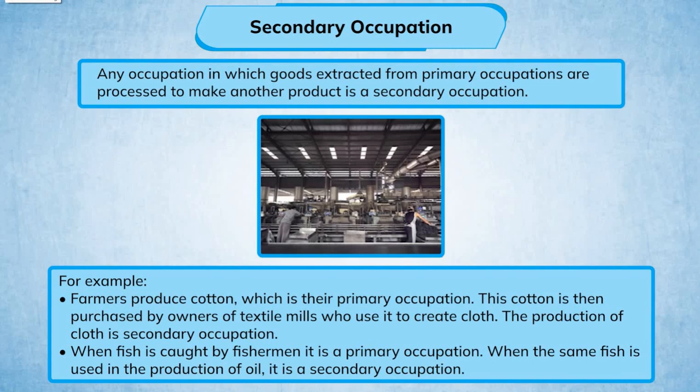When fish is caught by fishermen, it is a primary occupation. When the same fish is used in the production of oil, it is a secondary occupation.